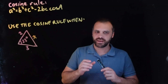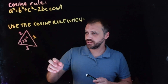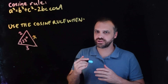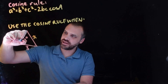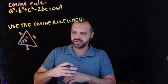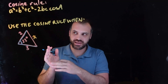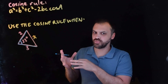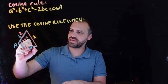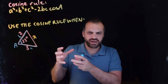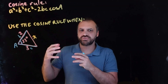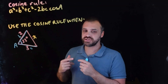So when do you have to use it? Here's an example: if you know two lengths and you know one included angle — the angle between them — you have to use the cosine rule. The sine rule won't work, because we have angle A and side A, length B, and length C. We have one thing from each category, but we need two things from one category to make the sine rule work.